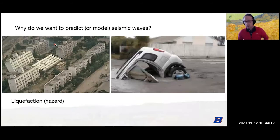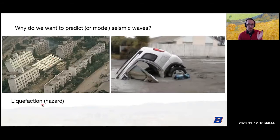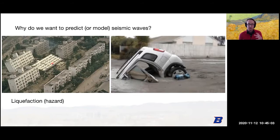I'd like to show some motivation for why we want to predict really small-scale heterogeneity of the earth. In Japan, an earthquake happened and some buildings kept their rigid structure, whereas underneath other buildings the ground lost all its rigid structure and the buildings tipped over — due to something called liquefaction, where solid ground turns into a liquid. Another example: a car sank when the subsurface turned to liquid. These things happen on really small scales — hundreds to tens of meters.